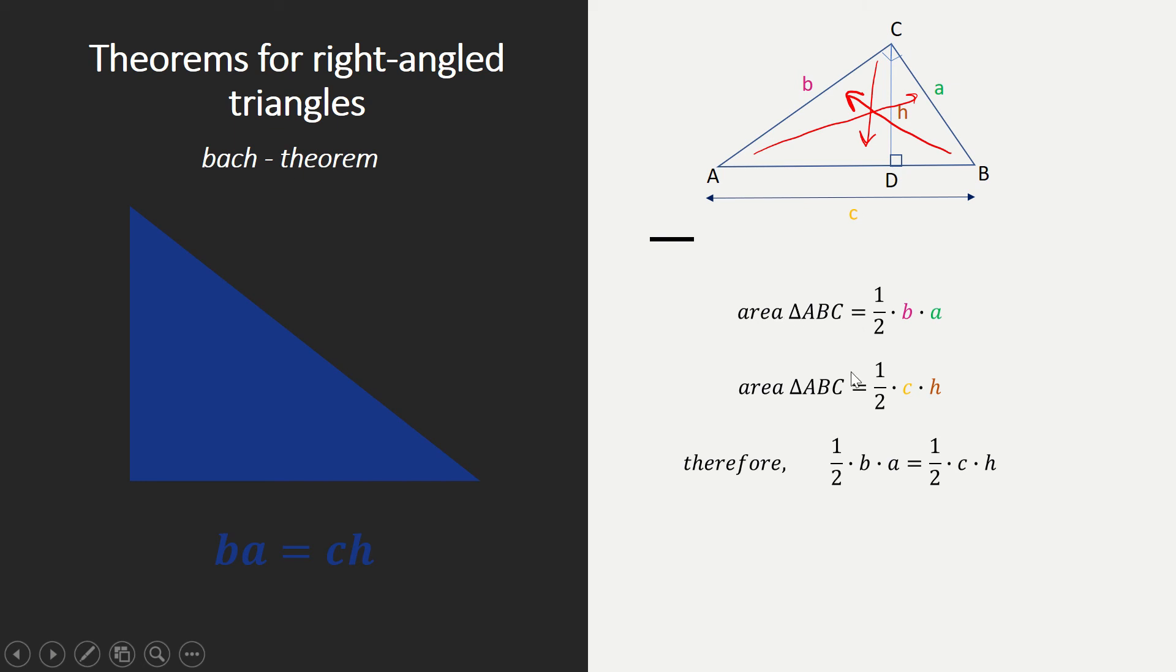Actually those two things are the same. So we can write down a half times B times A equals a half times C times H. Because on both sides there's a half, we can just cancel them out. So we get B times A equals C times H. And if we stick it together, we get BA equals CH or Bach. This is how our Bach theorem existed and the proof that this is indeed equal to it.